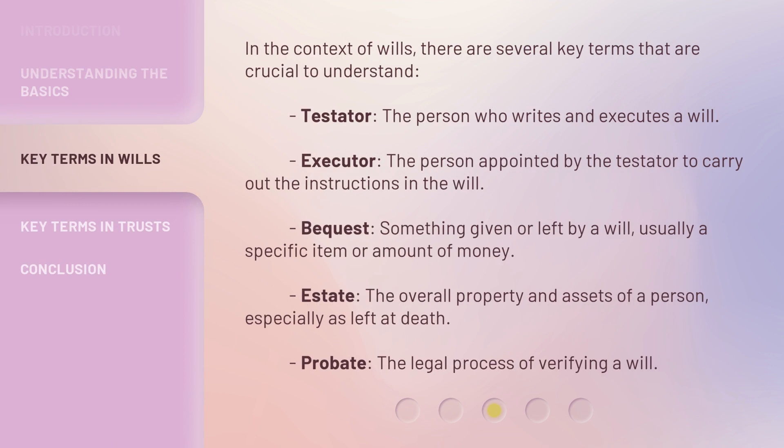In the context of wills, there are several key terms that are crucial to understand. Testator: the person who writes and executes a will. Executor: the person appointed by the testator to carry out the instructions in the will. Bequest: something given or left by a will, usually a specific item or amount of money. Estate: the overall property and assets of a person, especially as left at death. Probate: the legal process of verifying a will.